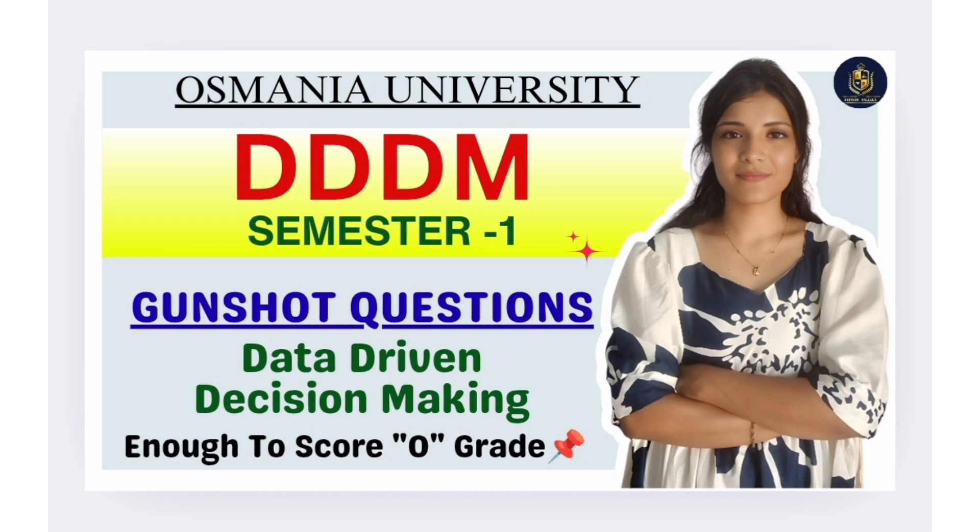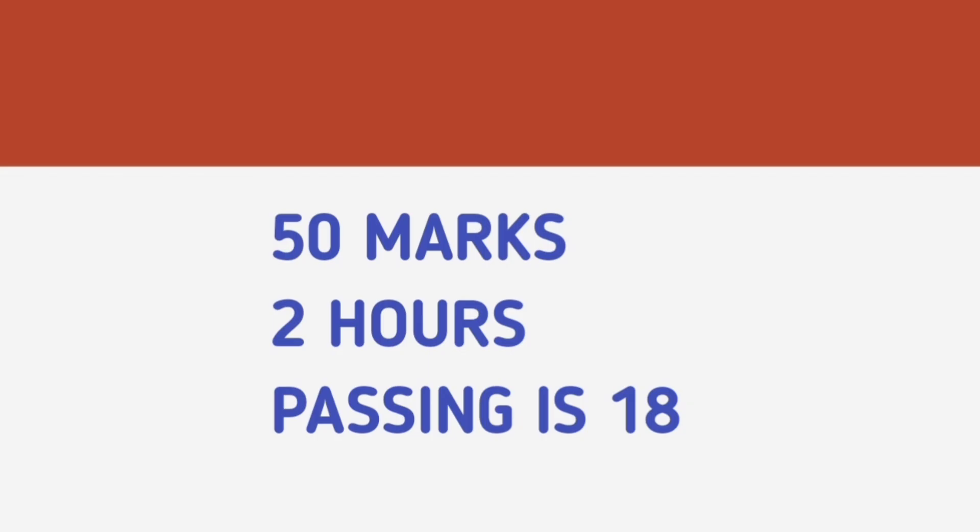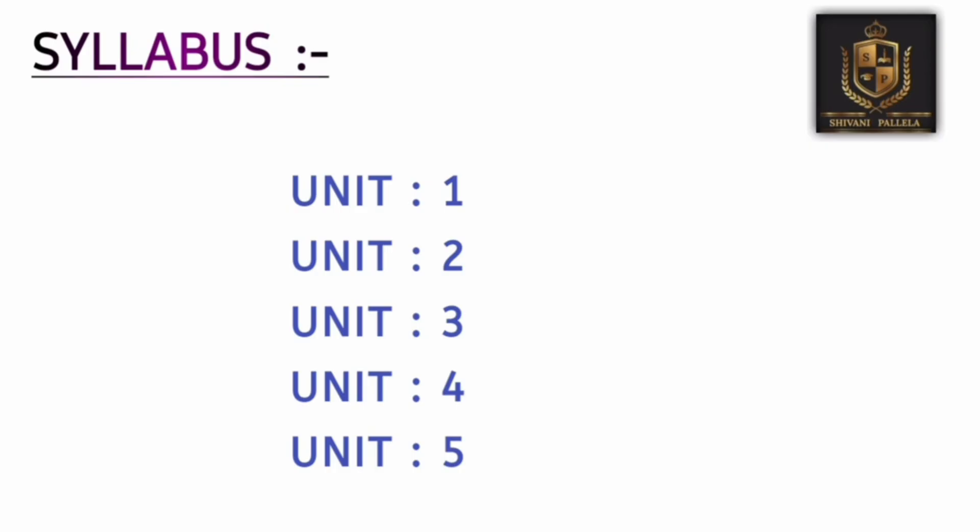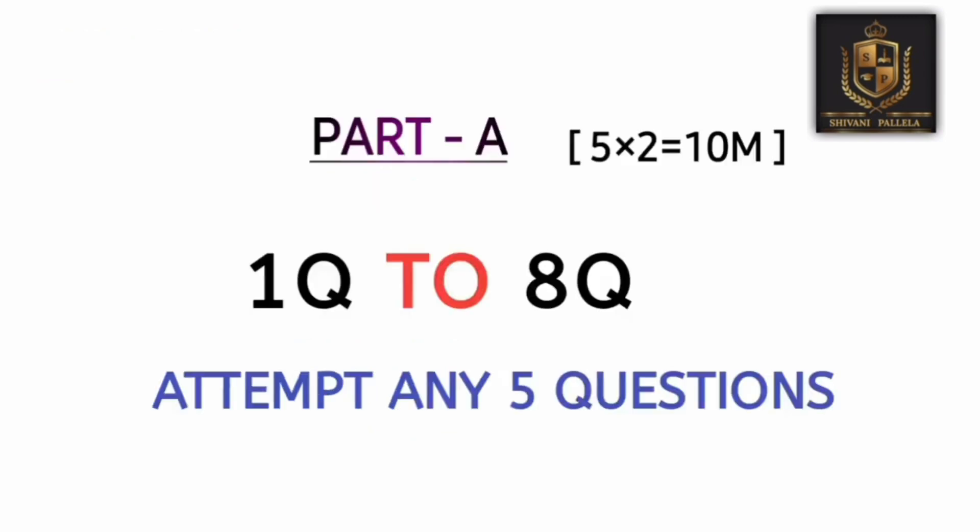Whatever questions I am covering in this video will be enough to score O grade. If you want only passing marks, try to prepare at least three units. It is a 50 marks paper, two hours is the time duration, and the passing marks is only 18. If you attempt too long and too short answers, you can automatically pass. There are a total of five units.